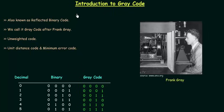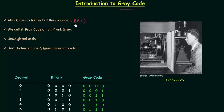In this lecture I will introduce gray code. In the last presentation we completed accessory code addition and the next type of code is gray code. Gray code is also known as reflected binary code, in short RBC, and we call it gray code because it was given by Frank Gray. We call it gray code after Frank Gray.